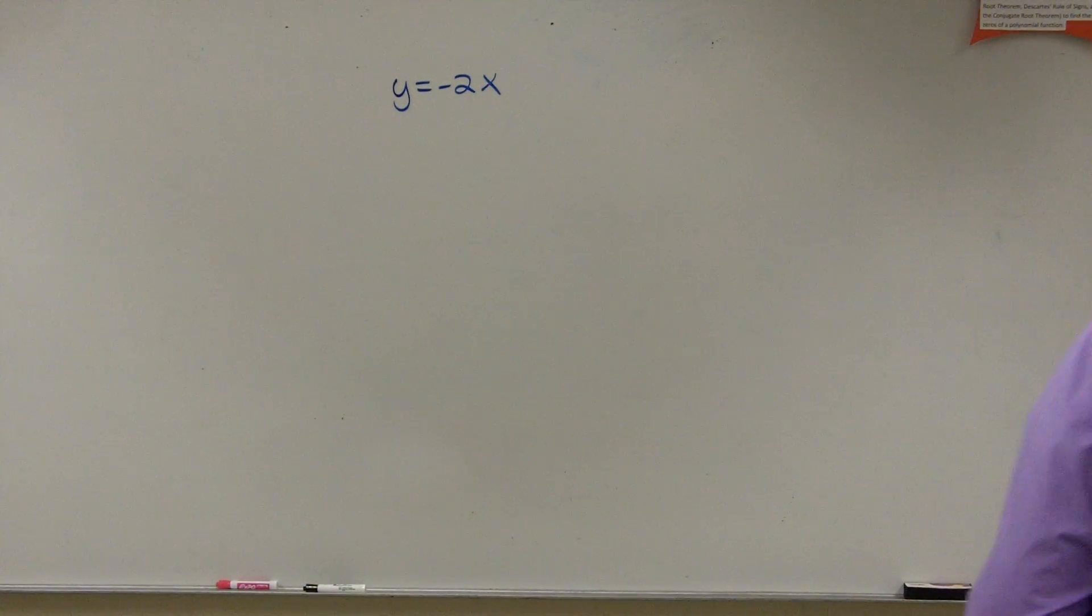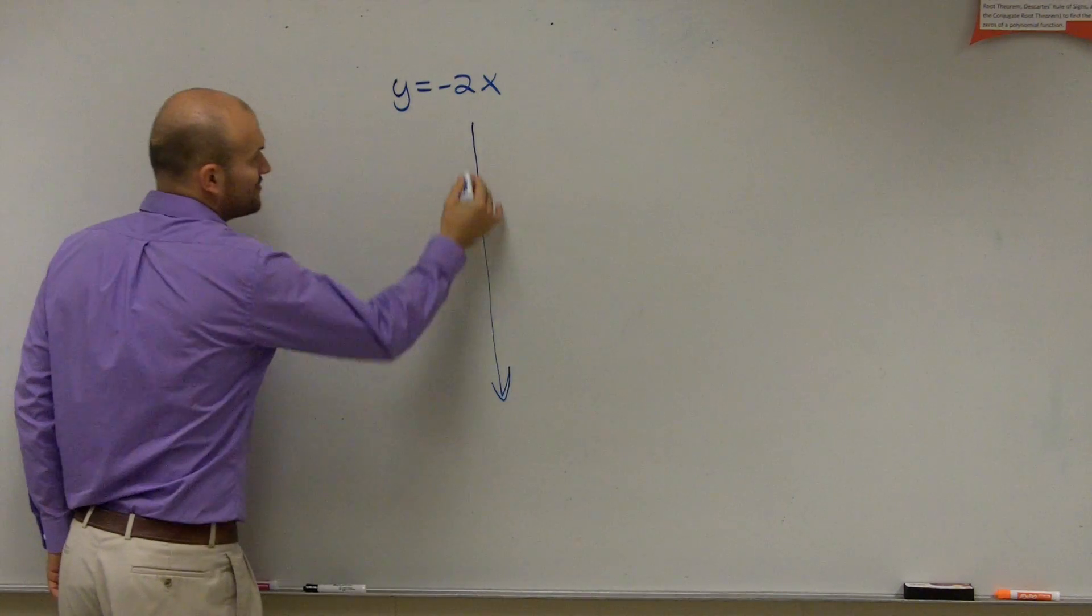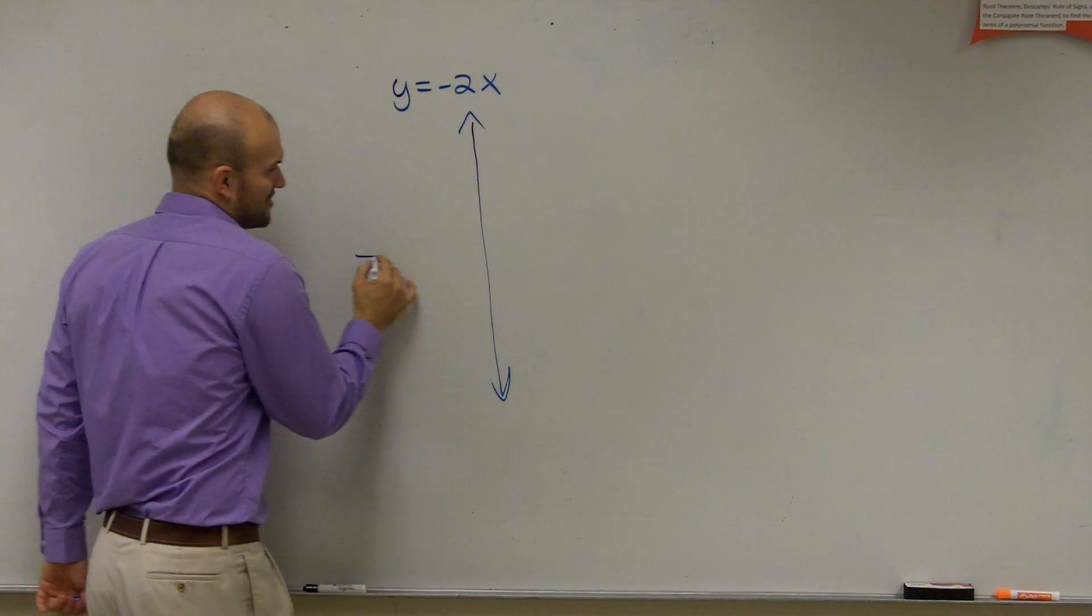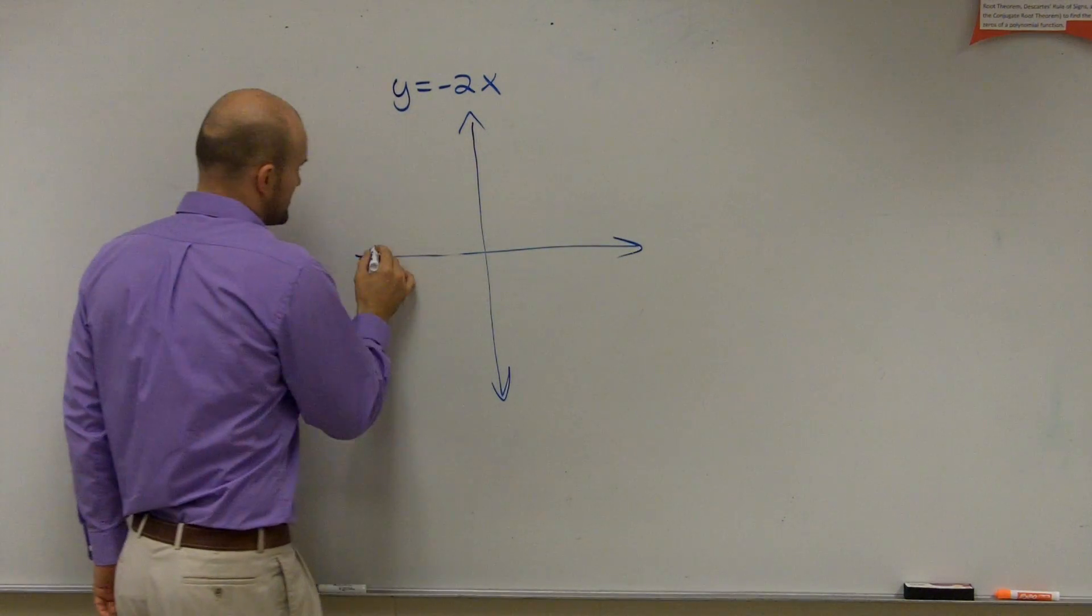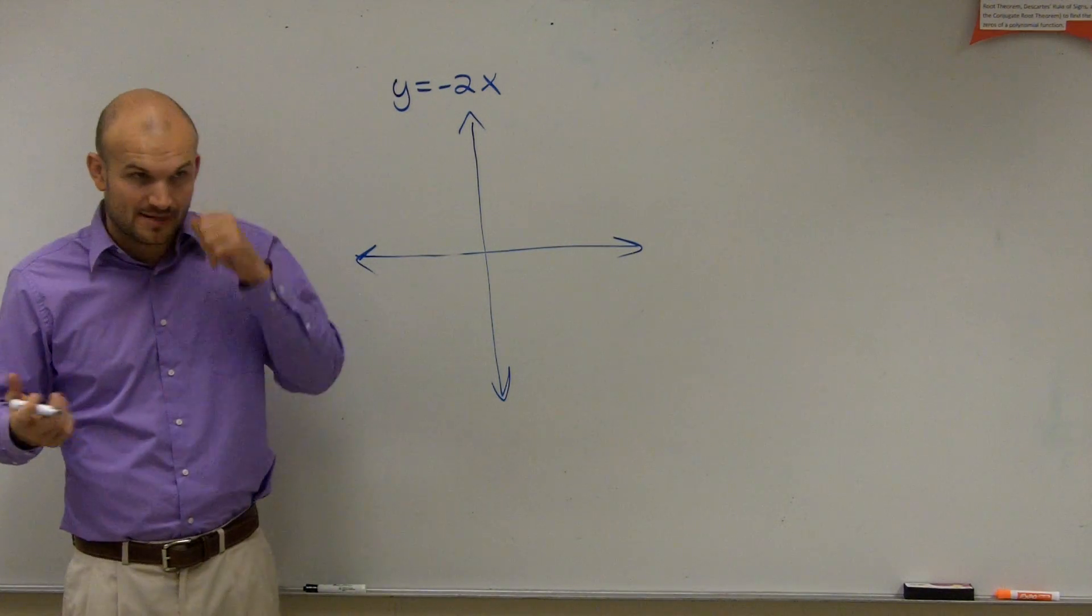All right. So I just need to graph this problem. We don't need to put this one in standard form because it's in mx plus b form. We can simply graph it by knowing what the slope is and what the intercept is.